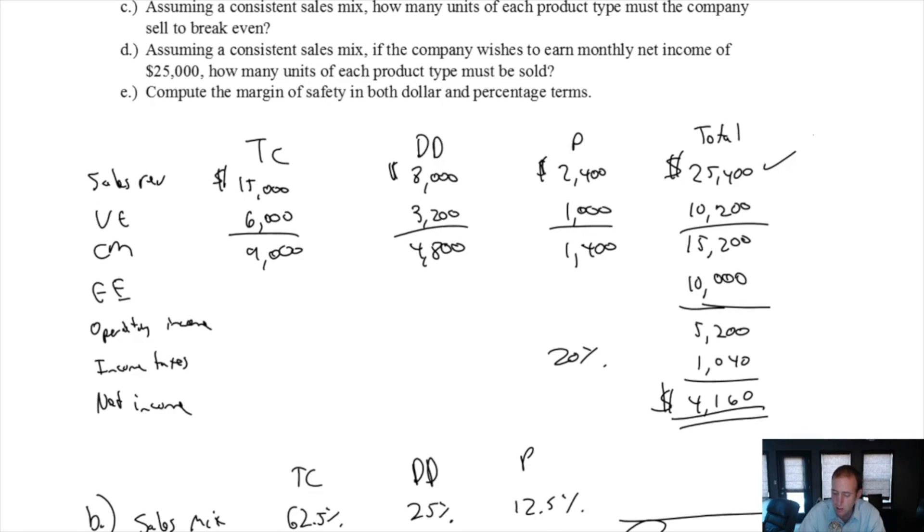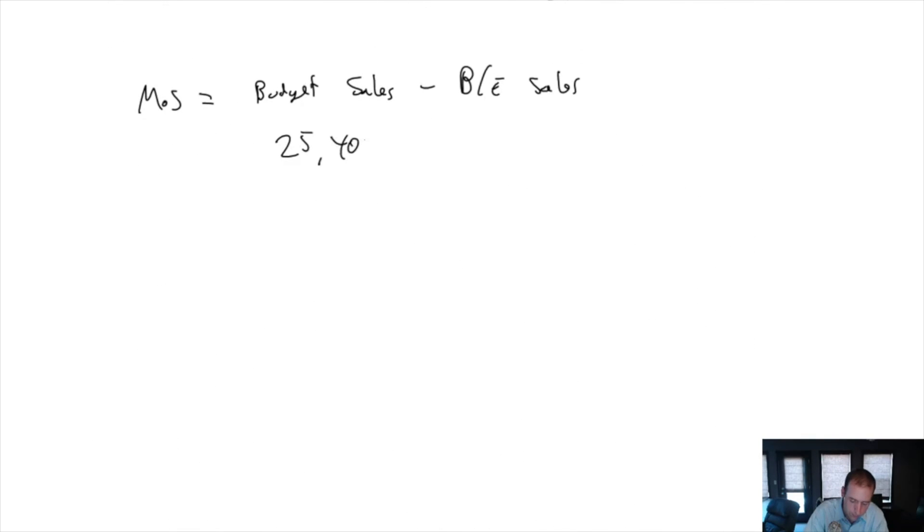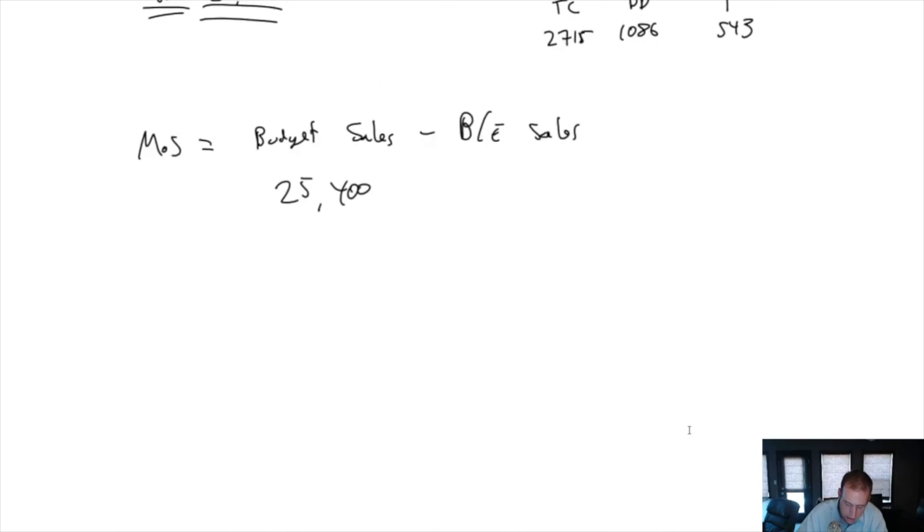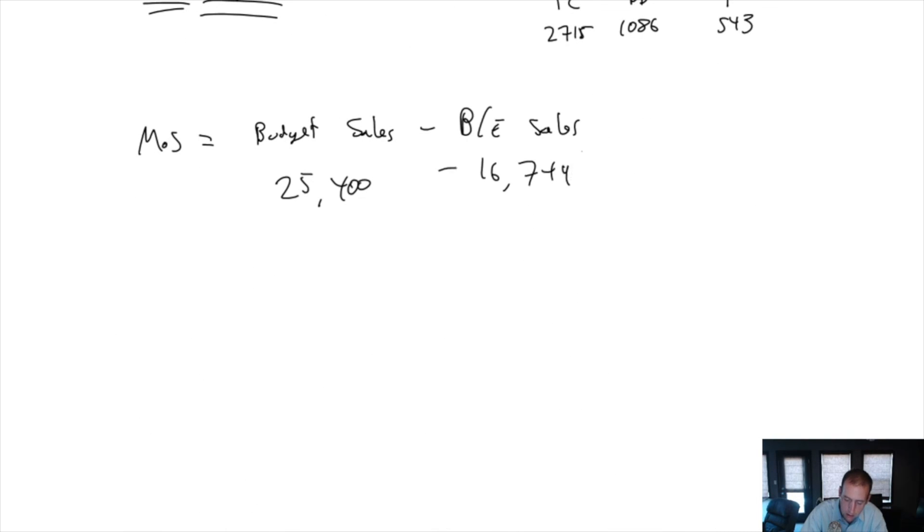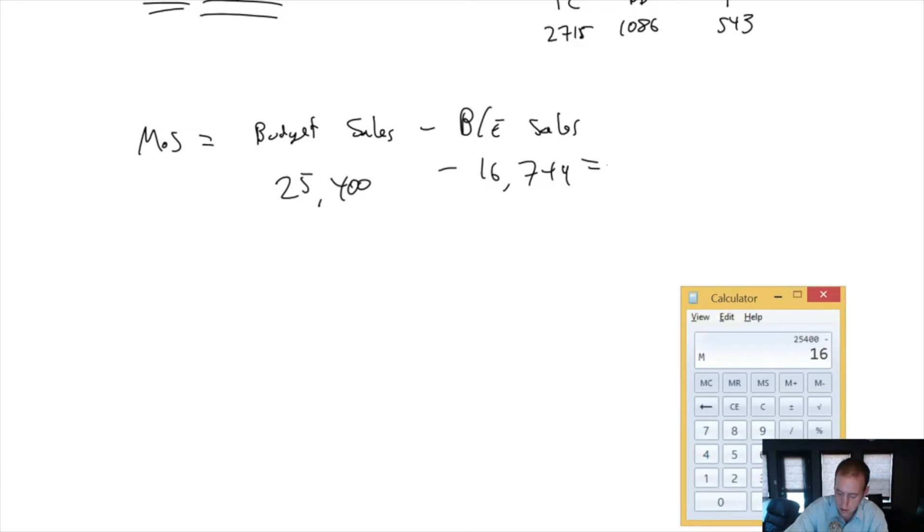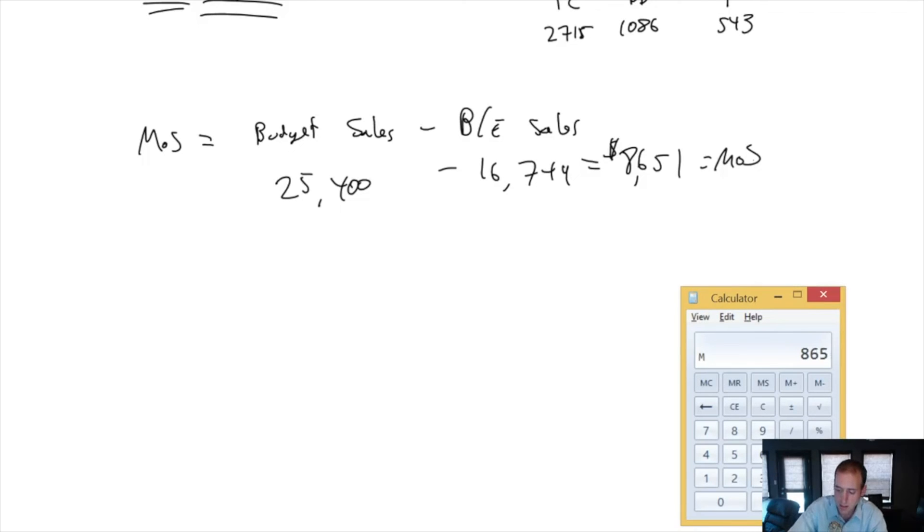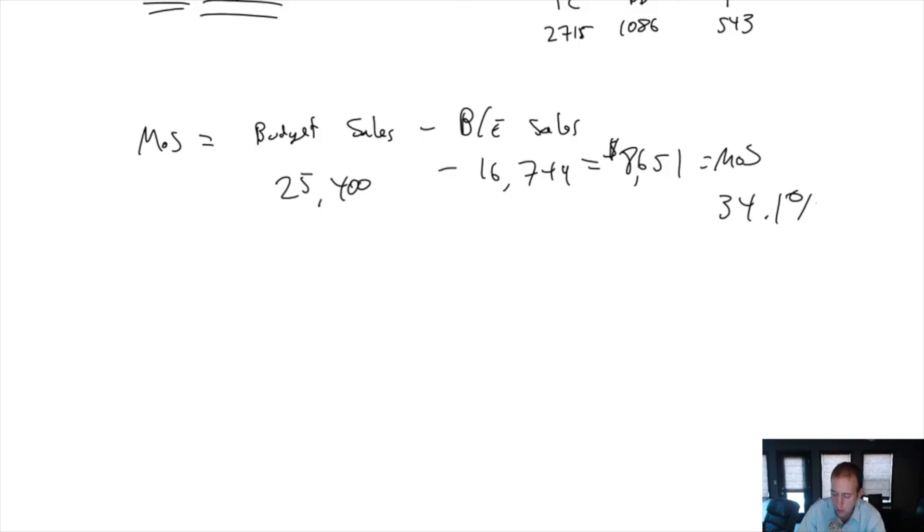Margin of safety equals budget sales minus break-even sales in dollars. Our budget sales in dollars come from our first budget, $25,400. Our break-even sales, we computed as $16,749. So $25,400 minus $16,749 is $8,651. That is our margin of safety. Our sales can be $8,651 below what we budgeted and we'll still be breaking even. That number as a percentage is $8,651 divided by $25,400, and you get 34.1%. So our sales can drop by 34% and we'll still be breaking even.